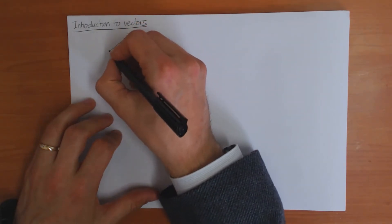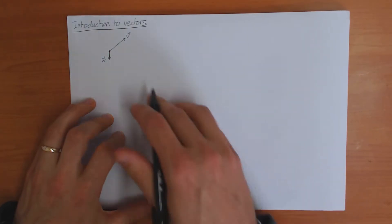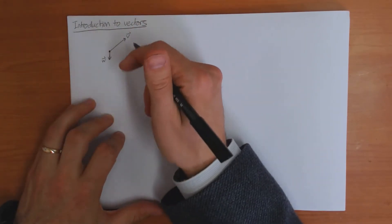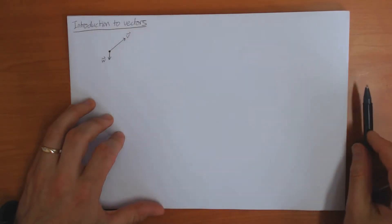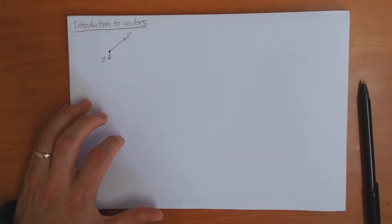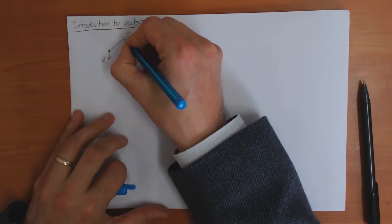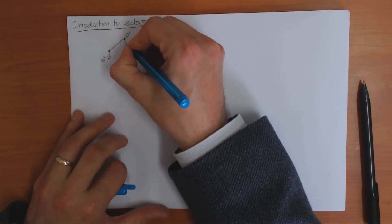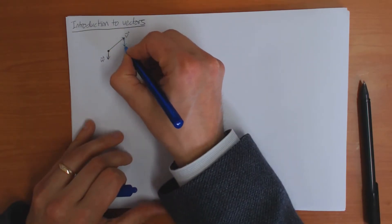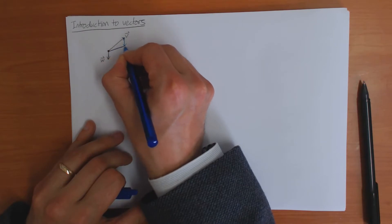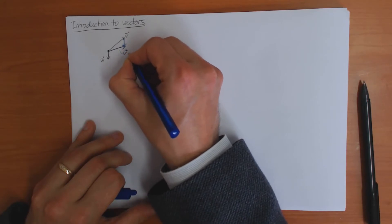Obviously there are different vectors you can have, so I could also have a vector w coming out like this. Now, the important mathematical property of vectors is that you can add and subtract them. If I have these two vectors v and w, I can form the vector v plus w by taking the vector w and moving it up to the end of v. Combining these, the result is this dark blue vector, which I define to be v plus w.